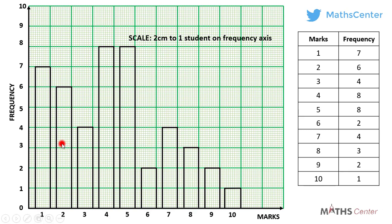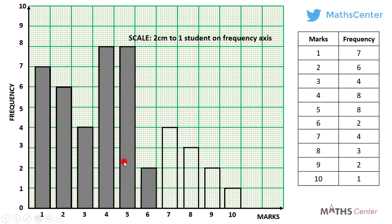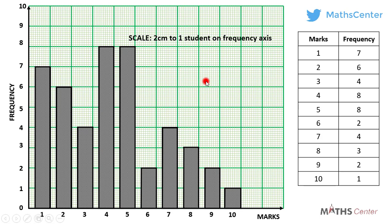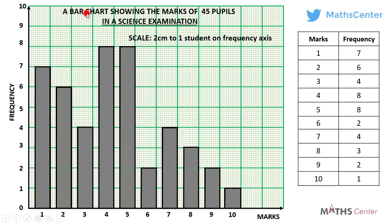After you are done, you can add a little design to all the bars to make them look nice. Our bar chart should also have a title, which we get from the question. We were told the data is the marks of 45 students in a science examination, so the title will be: 'A bar chart showing the marks of 45 pupils in a science examination.' We are done with the first part of the question.